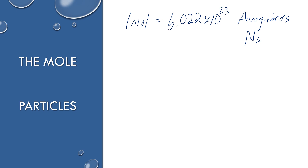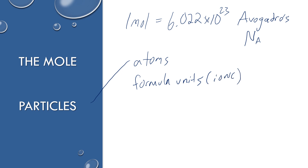The types of particles we're counting in chemistry could be a couple of different things. Sometimes we're talking about the number of atoms of a substance. For ionic compounds, we could be talking about the number of formula units. We could be talking about the number of distinct molecules for molecular substances, or a number of ions, a number of photons. Anything where there's a huge number of them, we can count simply using the mole.